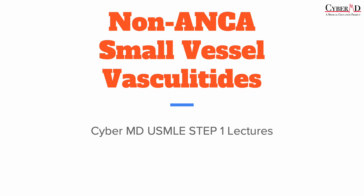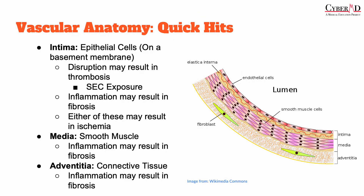First, we're going to talk about the layers of the blood vessel wall as a quick hit on vascular anatomy to prime us for the lecture. The innermost layer of the vasculature is called the intima, which is made up of epithelial cells that rest on a basement membrane. Moving on to the middle layer of the vessel wall, known as the media, it is composed of smooth muscle cells.